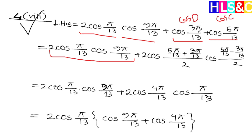We use the identity cos C + cos D. Applying this: cos C + cos D divided by 2 — same as sum of the key terms. We take (C+D)/2 = (5/13 + 3/13) / 2, and C minus D divided by 2 gives us (5/13 minus 3/13).